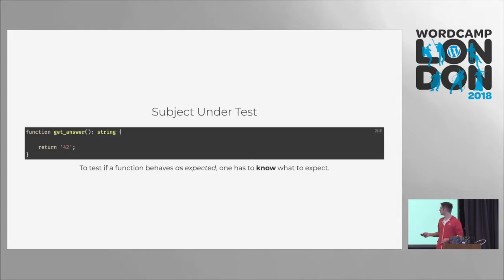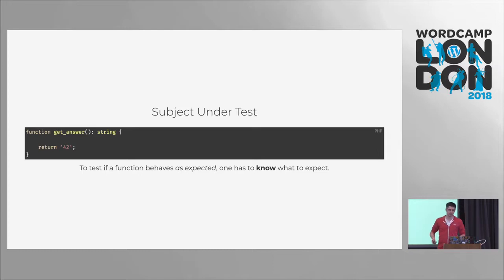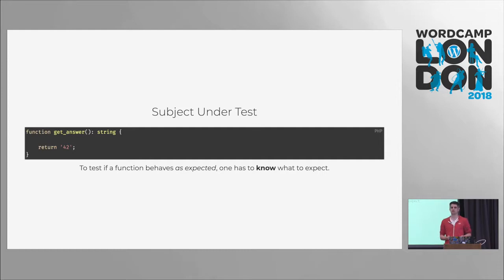Let's say this is a function — I have PHP and JavaScript code snippets. This is our subject under test, our function under test. If we want to make sure that this thing is behaving correctly, or as expected, we first have to know what is to be expected. In this simple case, the expectation is this thing returns the string 42 — no matter what, you can just call it and it will return 42.